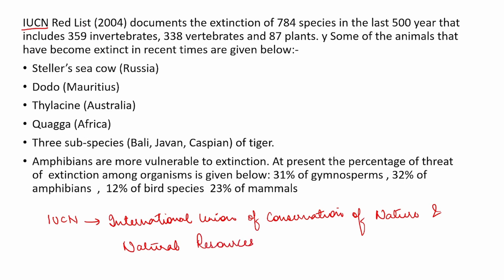The IUCN Red List in 2004 documents the extinction of 784 species in the last 500 years. That includes 359 invertebrates, 338 vertebrates, and 87 plants. Some of the animals that have become extinct in recent times are Steller's sea cow, Dodo — a bird from Mauritius — Thylacine, Quagga, and three subspecies of Tiger: Bali, Javan, and Caspian.